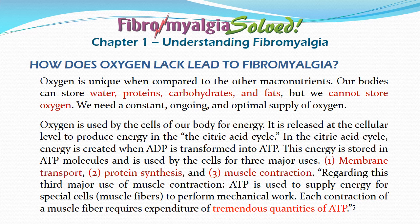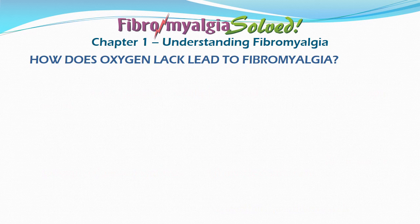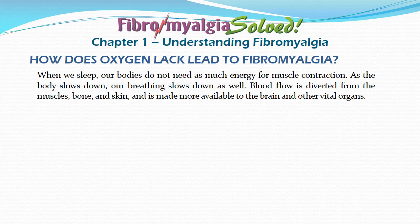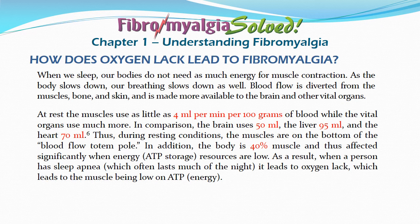Regarding muscle contraction, ATP supplies energy for muscle fibers to perform mechanical work — each contraction of a muscle fiber requires expenditure of tremendous quantities of ATP. When we sleep, our bodies do not need as much energy for muscle contraction. As the body slows down, breathing slows down as well. Blood flow is diverted from the muscles, bone, and skin, and is made more available to the brain and other vital organs. At rest, muscles use as little as 4 milliliters per minute per 100 grams of blood, while vital organs use much more.